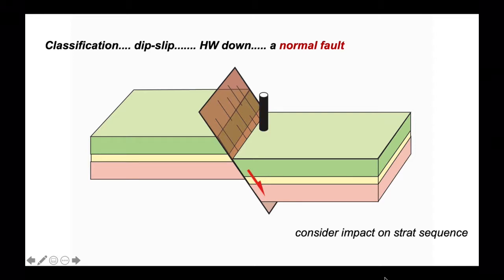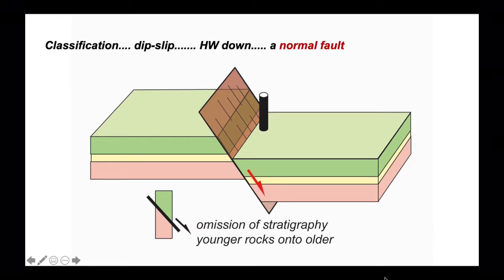Let's look in our imaginary borehole and in this time we've cut out the yellow horizon where the borehole is against the fault so we've omitted stratigraphy. Younger rocks, green rocks are put directly against the pink, the older rocks.